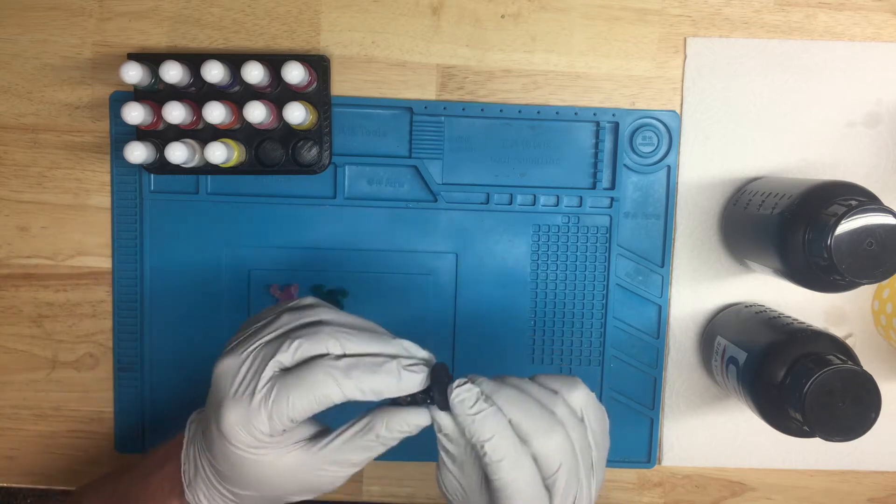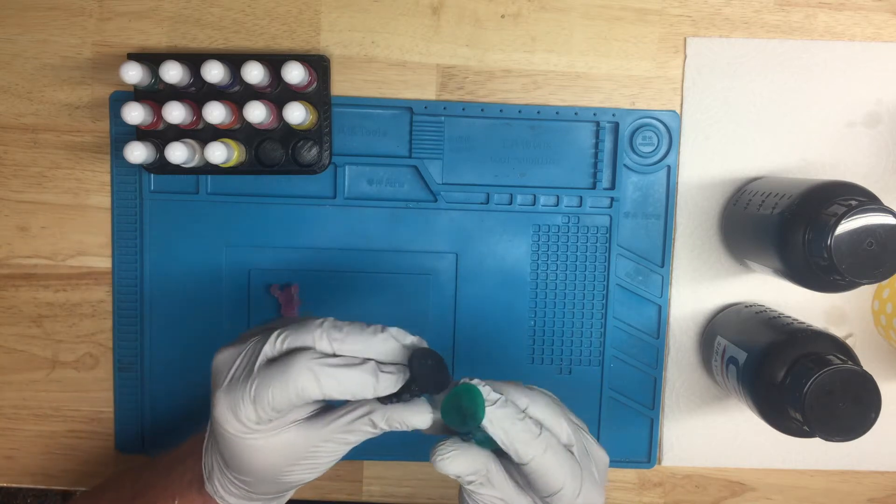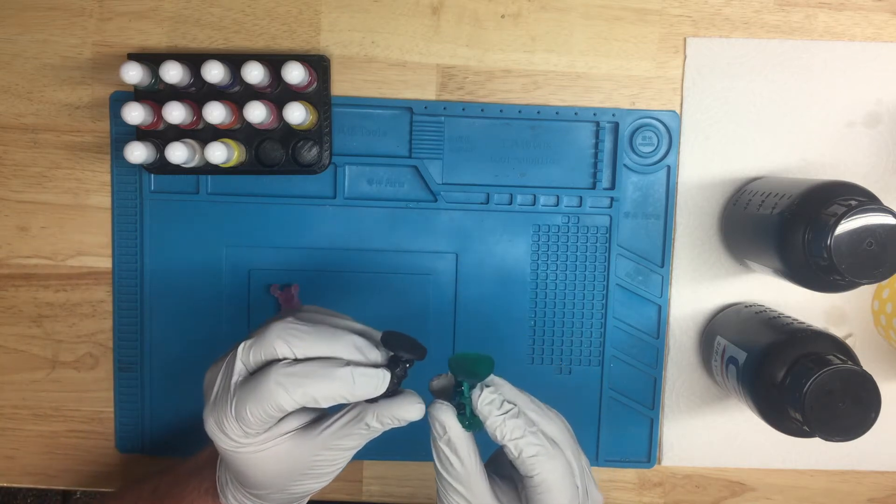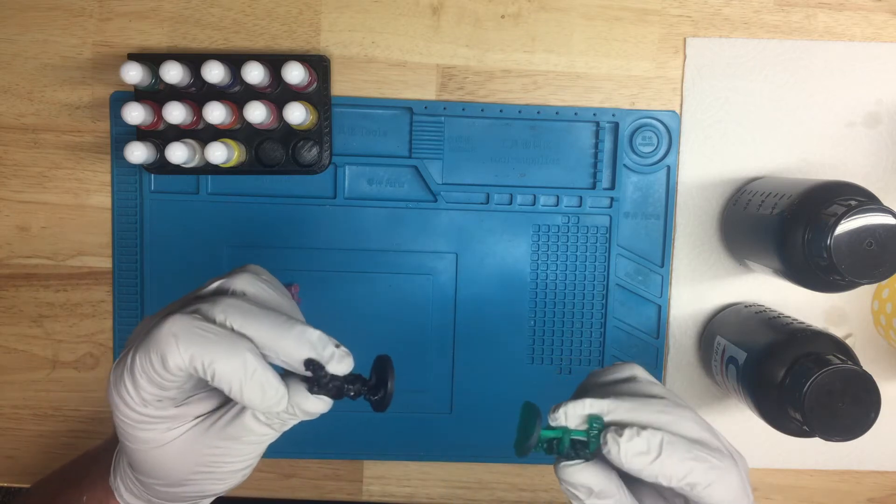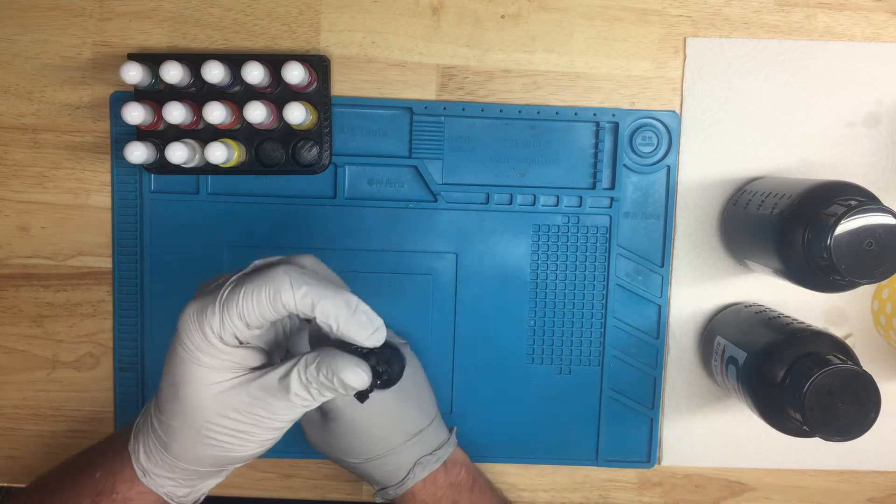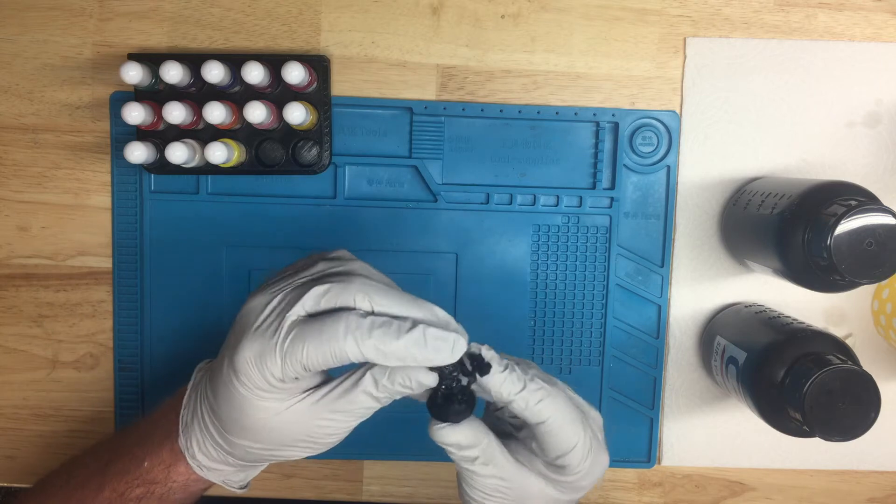The only difference in this model is I re-sliced it and added new supports. So that way the bottom wouldn't come out crooked. But the model came out pretty much perfect.